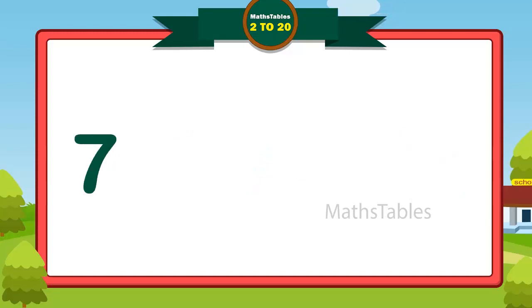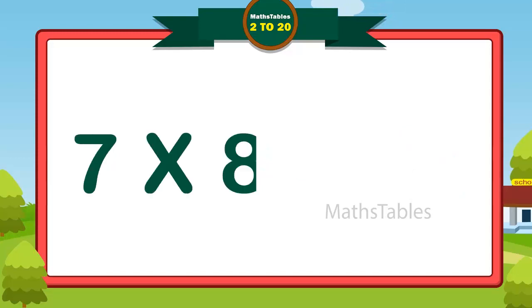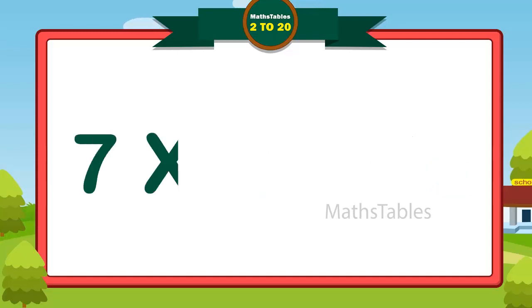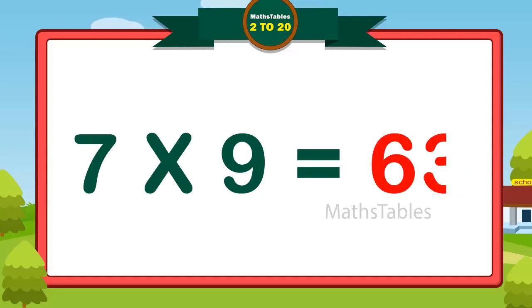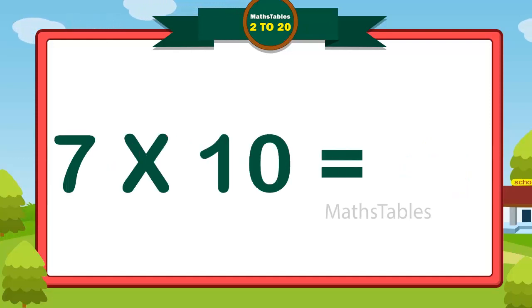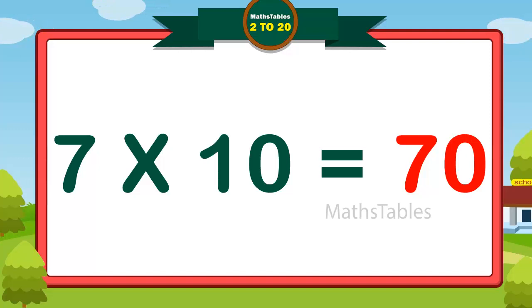7 eights are 56. 7 nines are 63. 7 tens are 70.